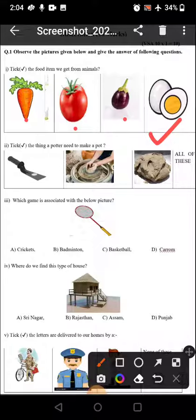Tick the thing a potter needs to make a pot. A potter needs this and this also. So all of these. He needs potter's wheel, he needs clay, he needs a trowel. So the answer is all of these.